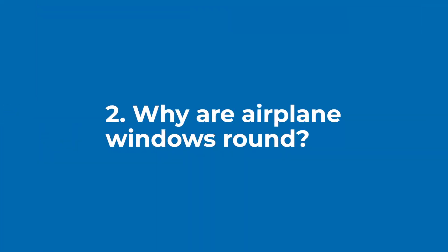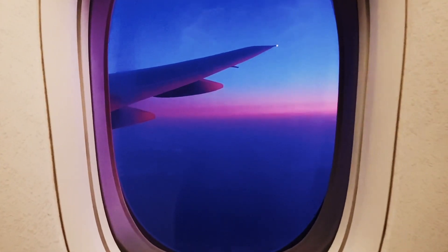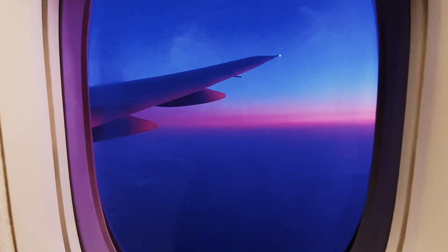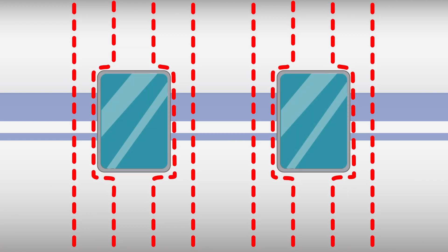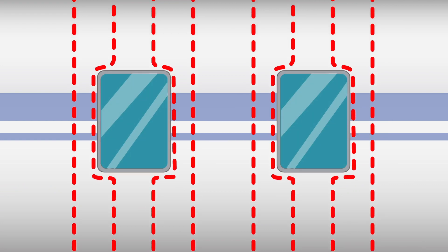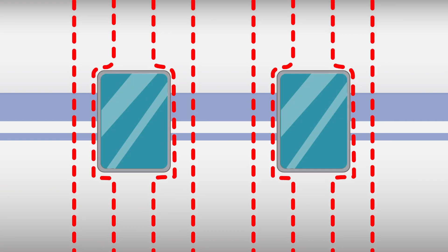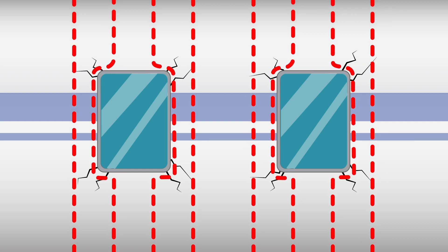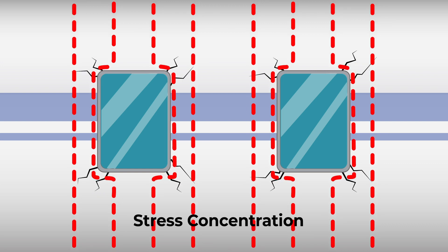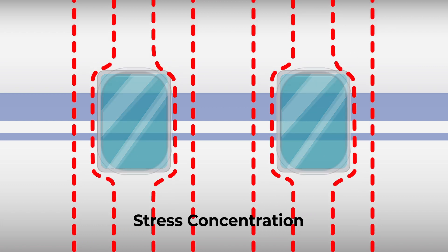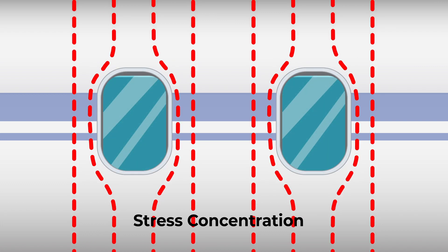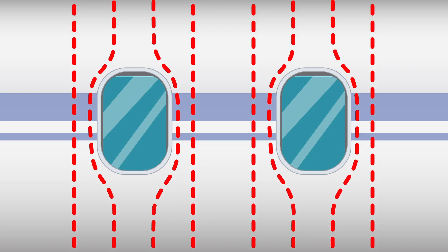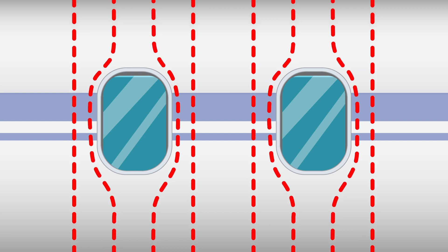Why are planes' windows round? High-altitude aircraft have round windows instead of square because stresses to the fuselage will flow smoothly through the material. But if an obstacle, like a square window, is placed in its path, the stress has to change direction, causing pressure to build up in the corners of the window. This is called stress concentration, but round windows distribute the stress much more efficiently, creating a much smoother path for the stress to travel.